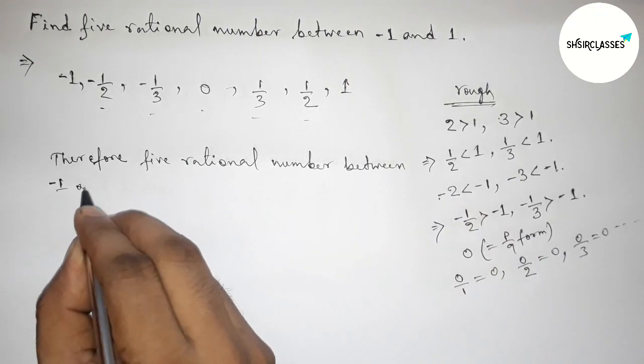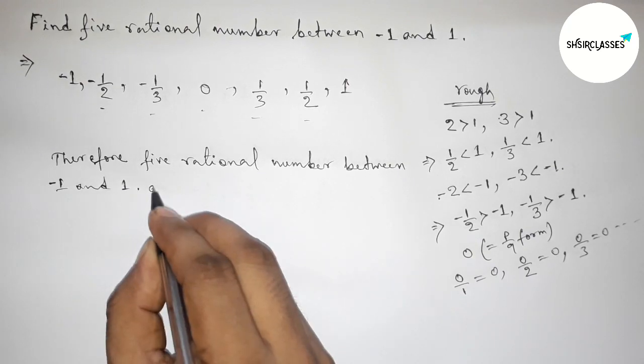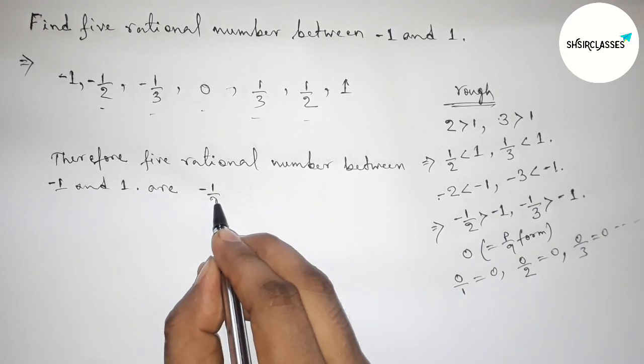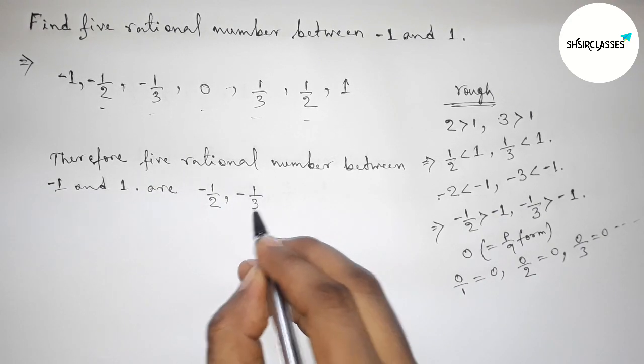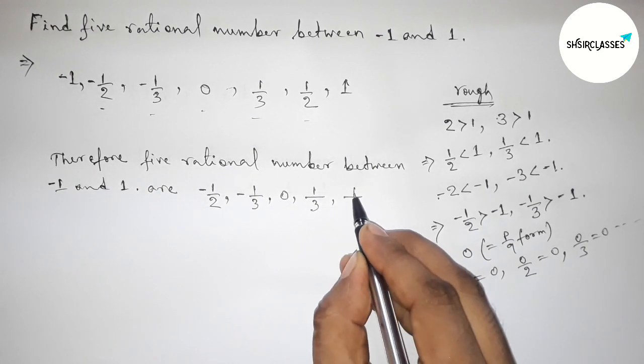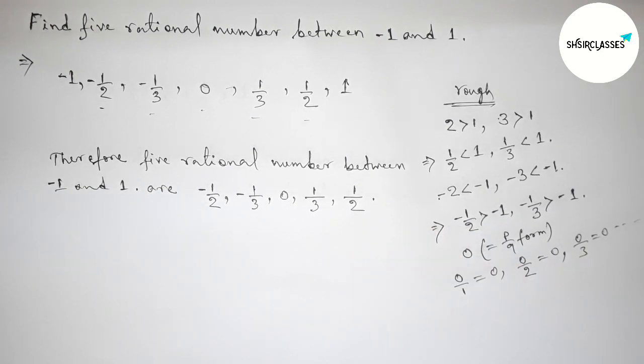So this is minus one by two, then minus one by three, then zero, one by three, and last one is one by two. So by this way you can find five rational numbers between minus one and one. So that's all, thanks for watching.